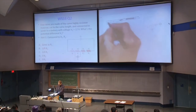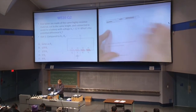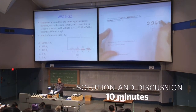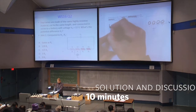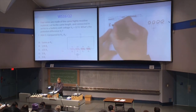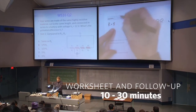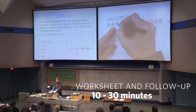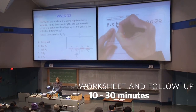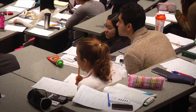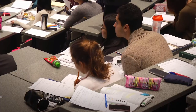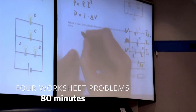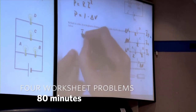A detailed solution with discussion follows and can take up to 10 minutes. So a complete worksheet activity with follow-up can take anywhere between 10 and 30 minutes, depending on complexity and difficulty. In the 80-minute physics class, an average of four worksheet problems are discussed.